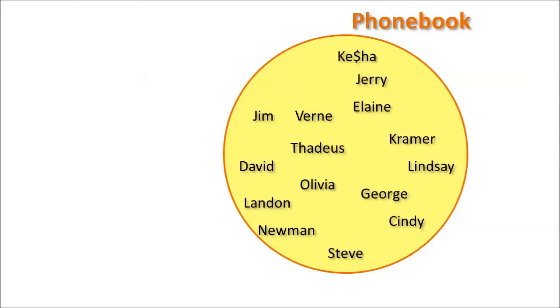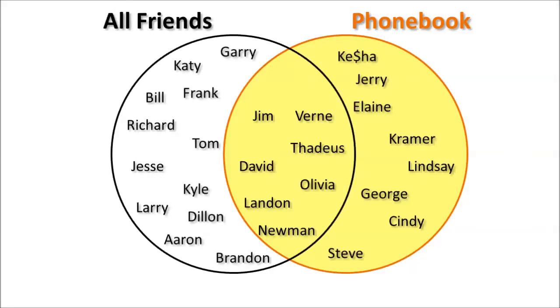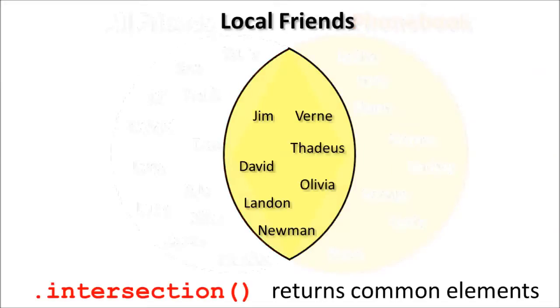So to do that, let's look in the phone book. Here's a set representing all of the people in my local phone book. If we overlay the set of all my friends, you can easily see that some of my friends are in the phone book, which means they live nearby, and others are not, so they probably live far away. To get this set of just my local friends, we can use the intersection operator, which will return a set of the items which exist in both the phone book and the set of all my friends.